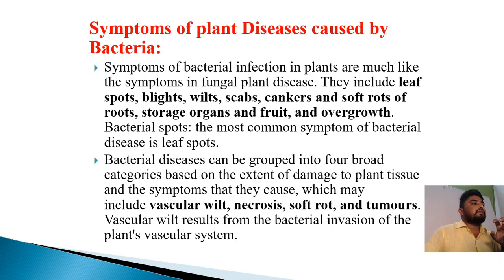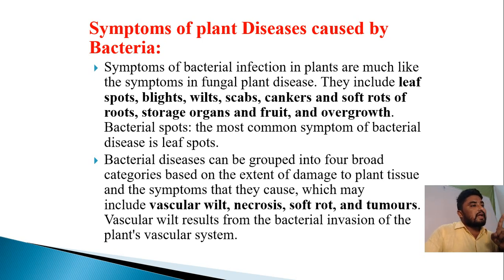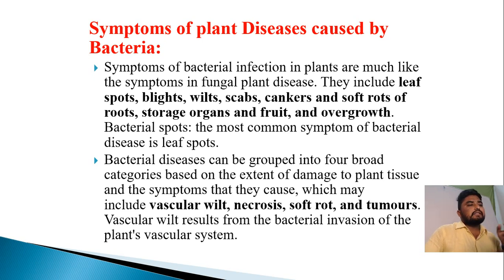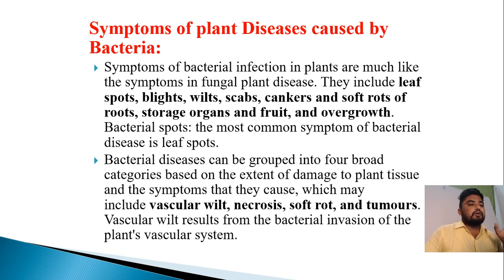The symptoms of plant diseases caused by bacteria: the symptoms of bacterial infection in plants are much like the symptoms in fungal plant diseases. They include leaf spots, blights, wilts, scabs, cankers, and soft rots of roots, storage organs, fruit, and overgrowth. Leaf spots are the most common symptom of bacterial disease. Bacterial diseases can be grouped into four broader categories based on the extent of damage to plant tissue: vascular wilt, necrosis, soft rot, and tumorous. Vascular wilt results from bacterial invasion of the plant's vascular system.